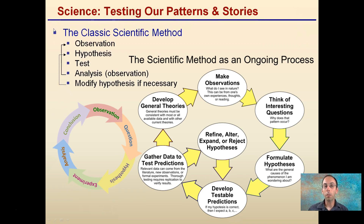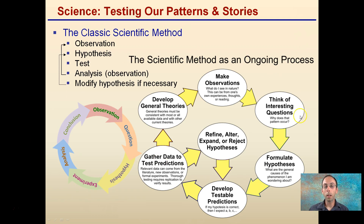In science, we're looking at testing our patterns and stories. We typically do this through a variation of the scientific method, where observations lead to hypotheses that allow us to test those hypotheses, and then through analysis and observations we can modify that hypothesis and go through more observations. We have observations that lead to questions, those questions lead to hypotheses we can test, we experiment, analyze, draw a conclusion, do more observations, which leads to more questions — a revolving circle. The key part in science is to stay inquisitive, to keep asking questions, and to develop conclusions while also generating more questions.